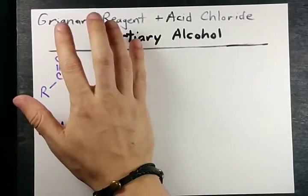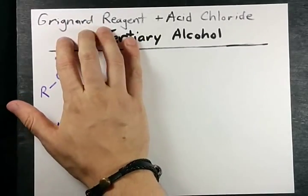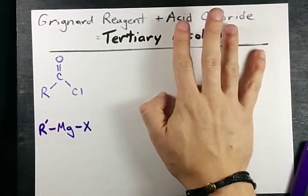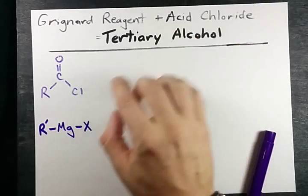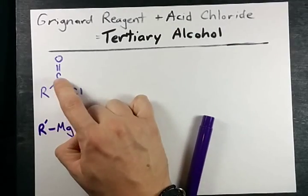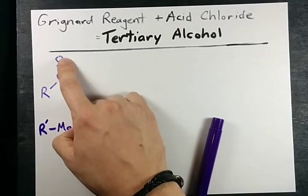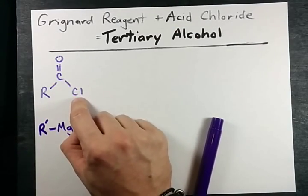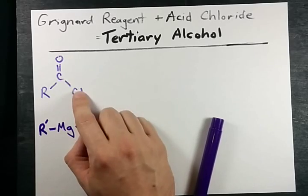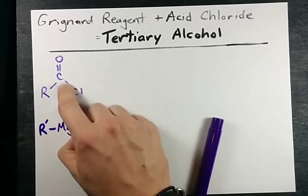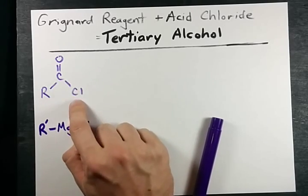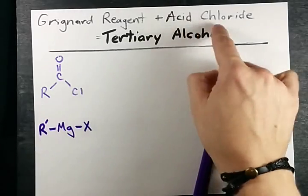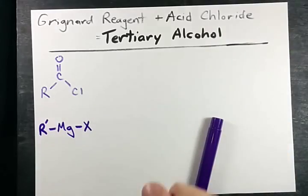Here's my video about what happens when you mix a Grignard reagent with an acid chloride. That is a carbon chain that has a double bonded oxygen and a chlorine on the end — kind of like a carboxylic acid but a chloride. That's why we call it an acid chloride.